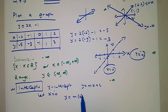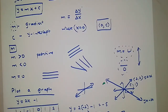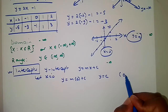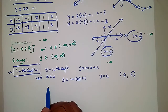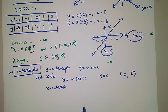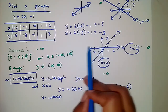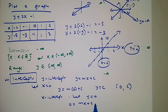When you let x = 0 in y = mx + c, you get y = m(0) + c = c. That is why c is the y-intercept — the coordinates of the y-intercept are (0, c). For the x-intercept, the graph cuts the x-axis where y = 0, so you let y = 0 and solve: 0 = mx + c, then solve for x.